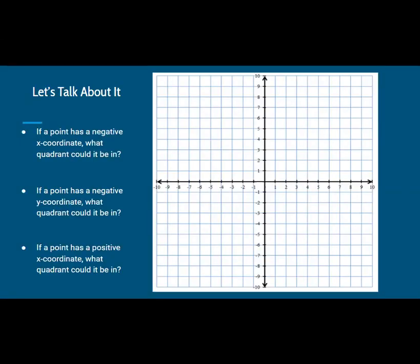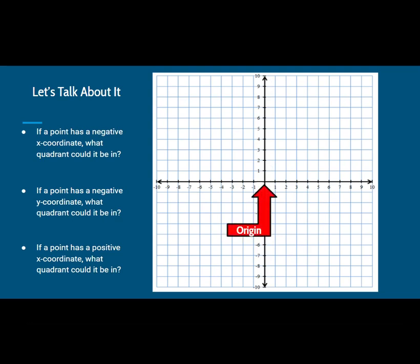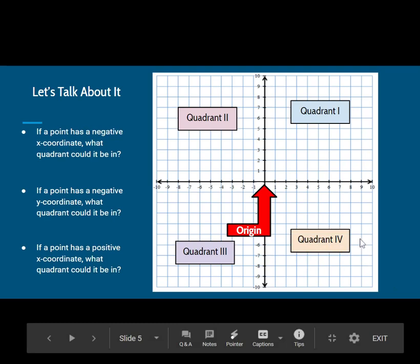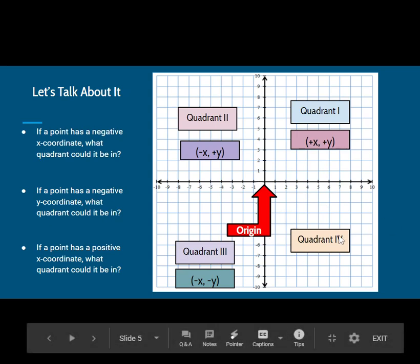On the previous slide we found the ordered pairs to describe points on a coordinate plane. Remember that the x-axis and the y-axis intersect at the origin and divide the coordinate plane into 4 quadrants. Quadrant 1 is in the top right. Quadrant 2 is to the left of the origin and has a negative x-coordinate and a positive y-coordinate. Quadrant 3 has a negative x-coordinate and a negative y-coordinate. And Quadrant 4 has a positive x-coordinate and a negative y-coordinate.